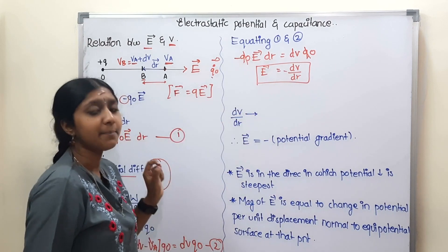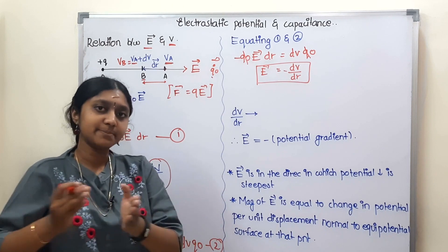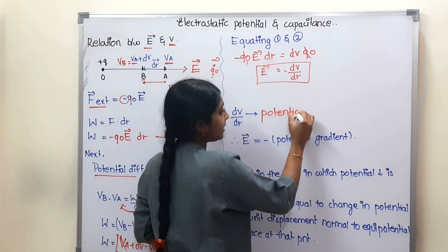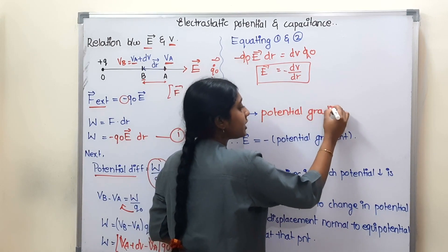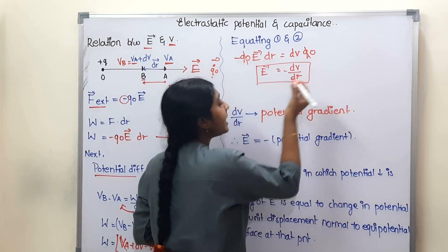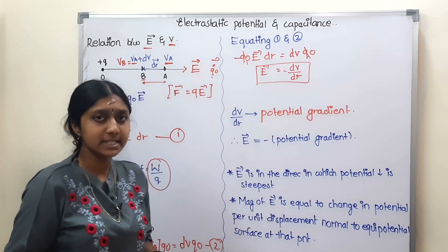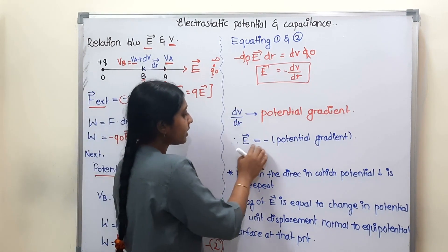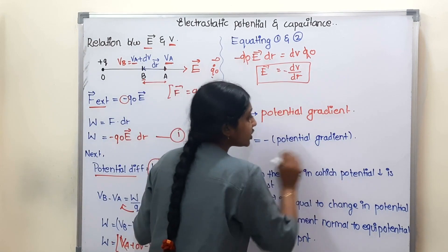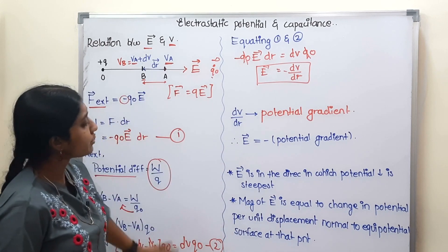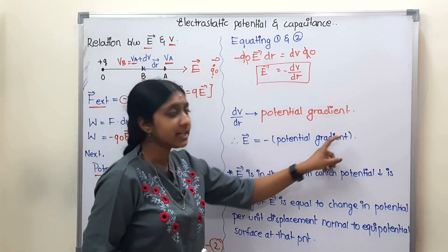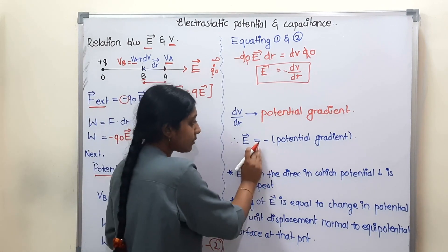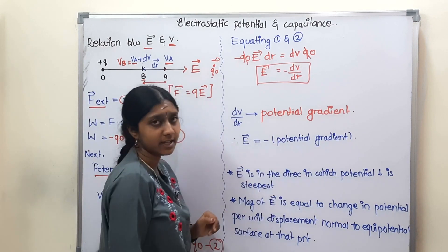So electric field is equal to minus dV by dr. Here dV by dr is the change in potential with respect to displacement, which we call the potential gradient. The electric field at any point is equal to the negative of the potential gradient at that point.